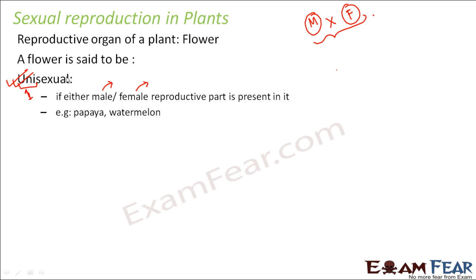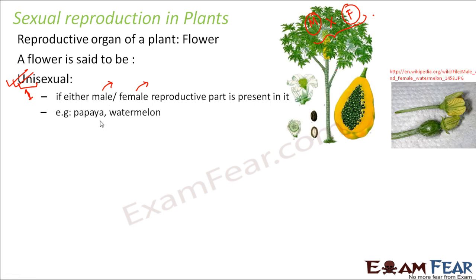Such flowers are called unisexual — 'uni' means one — so these flowers contain only one sex, either male or female. Examples of such plants are papaya and watermelon. Looking at the example of watermelon, you can see this is the male part and this is the female part. Some plants contain the male part and some contain the female part, but one plant will contain either male or female.